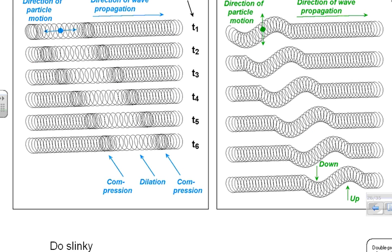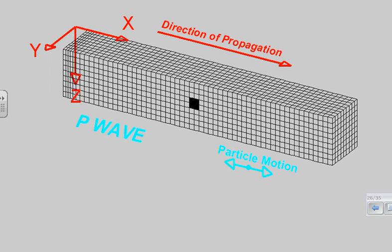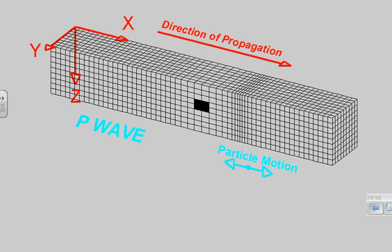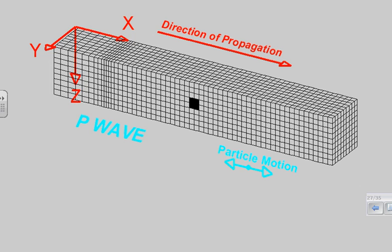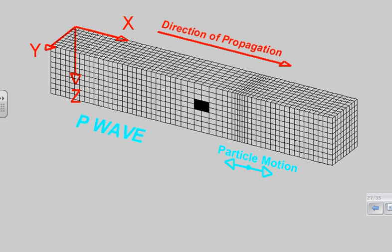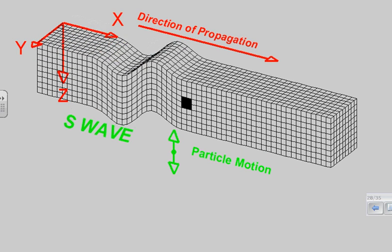Looking at a diagram, on the left we see how P waves are propagated — the motion is a push-and-pull compression along the direction the wave travels. On the right we see S waves, where the motion is up and down, transverse to the direction of the wave. As a P wave moves from left to right, the material pushes slightly but the wave propagates all the way across. The S wave gives more of an up-and-down motion.